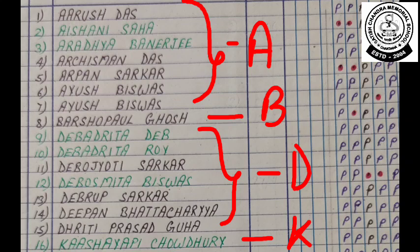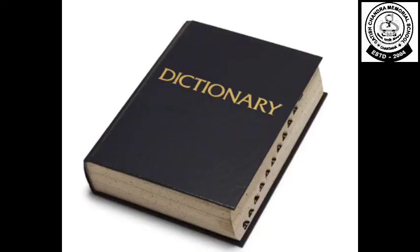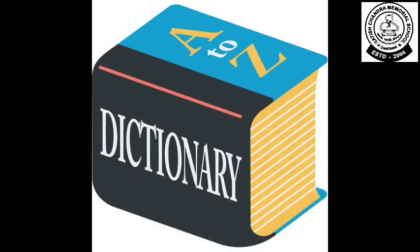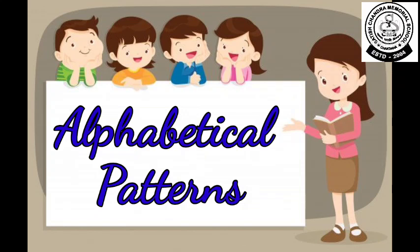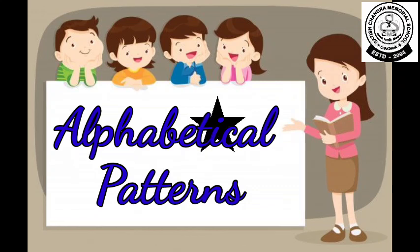Now next thing you are regularly using, that is dictionary, when we have to find out any meaning of the word. So here also you can see, in dictionary also all the words are arranged in alphabetical order. That is first with A, then B, after that C, then D. Like this it will continue. So today what we learn? We learn alphabetical pattern. So let us see some more examples based on alphabetical patterns.